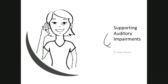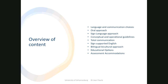Hi, I'm Dr. Jean Fauree and today we're talking about supporting learners who have auditory impairments. We previously spoke about the structure and function of the ear, how it converts sound into meaning in our brains, and about various impairments and difficulties children can have with hearing. Today we're going to look at how to support these learners — what we can do to assist with language, communication, sign language, educational options, and assessment accommodations.